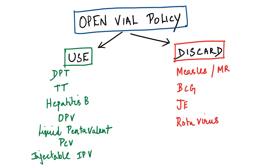For vaccines like measles or MR, BCG, JE, and rotavirus vaccines, they should be discarded at the end of the session or within 6 hours of opening the vial. Open vial policy does not apply to these vaccines.